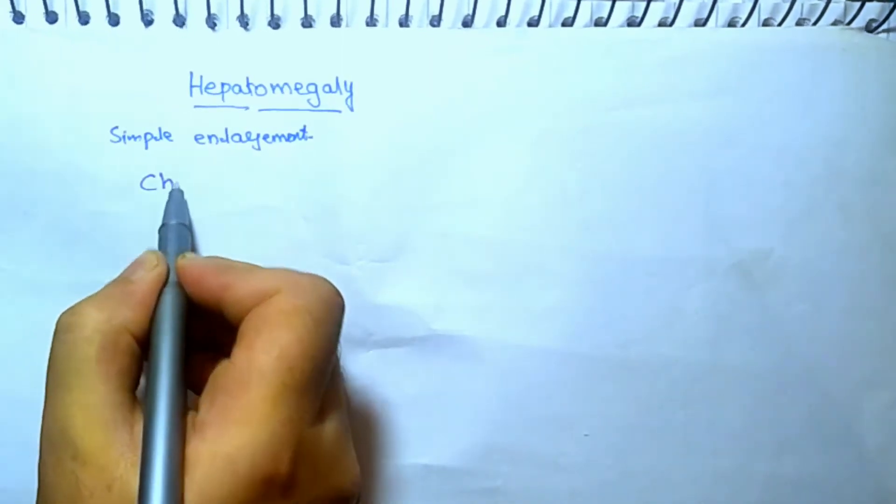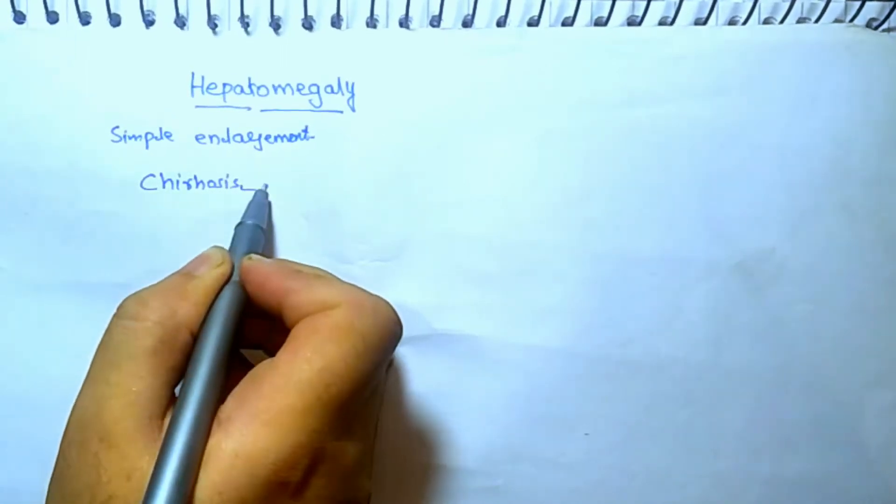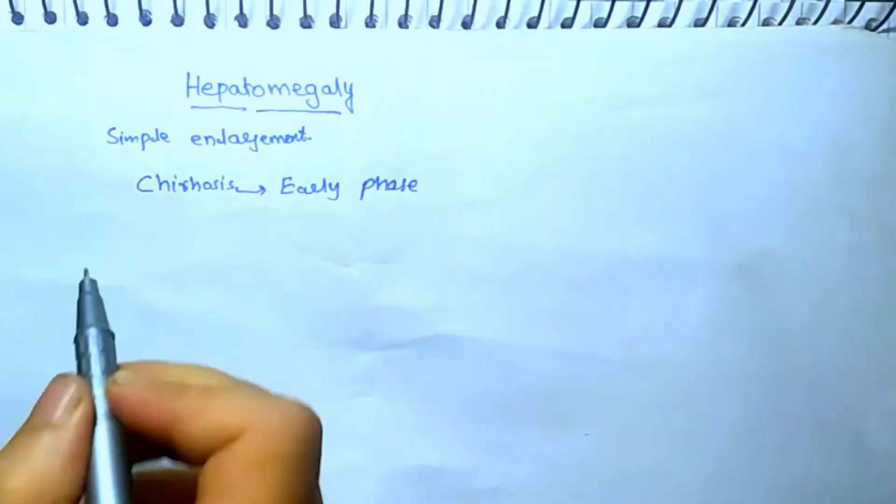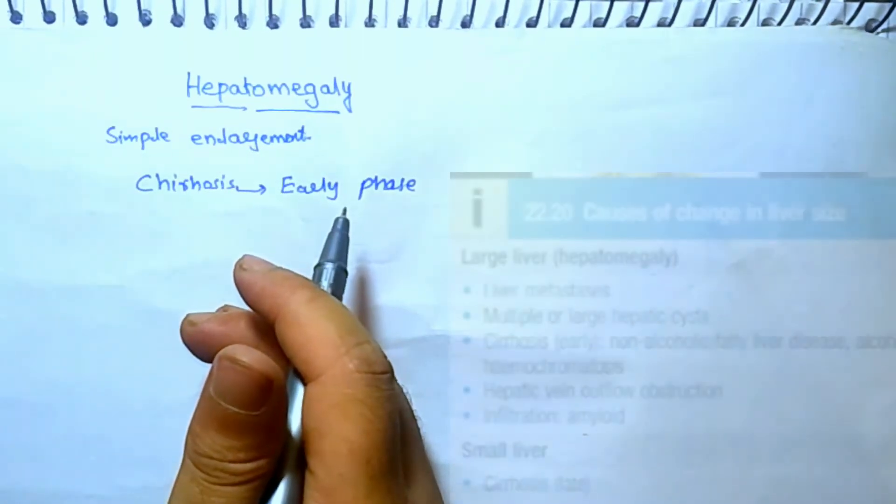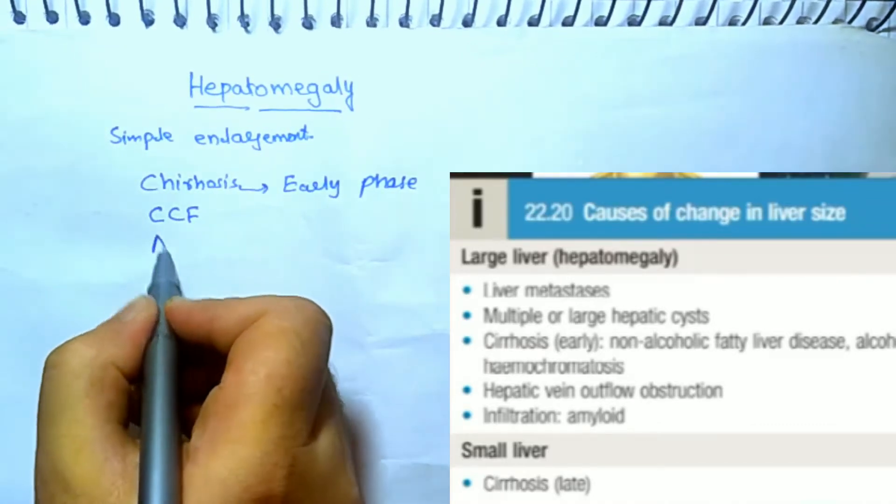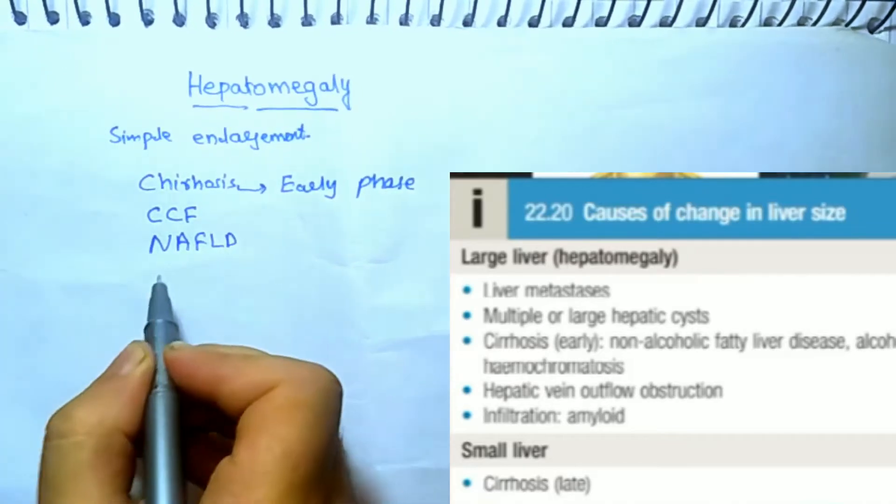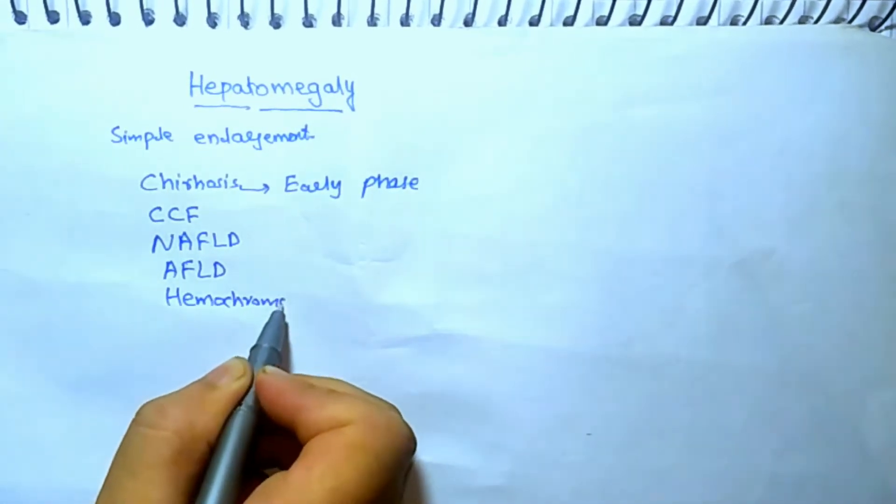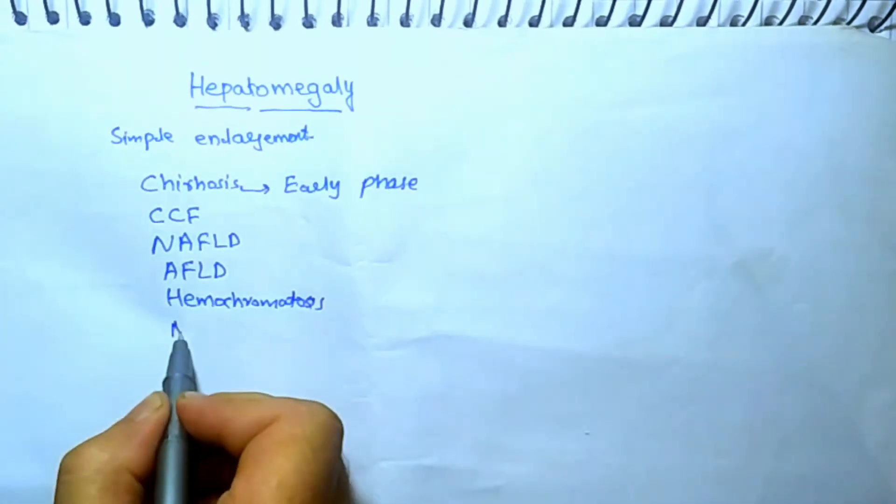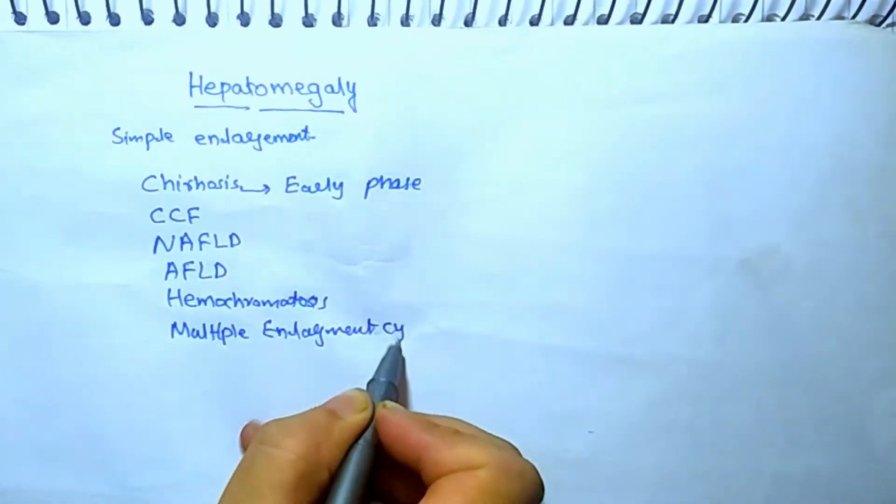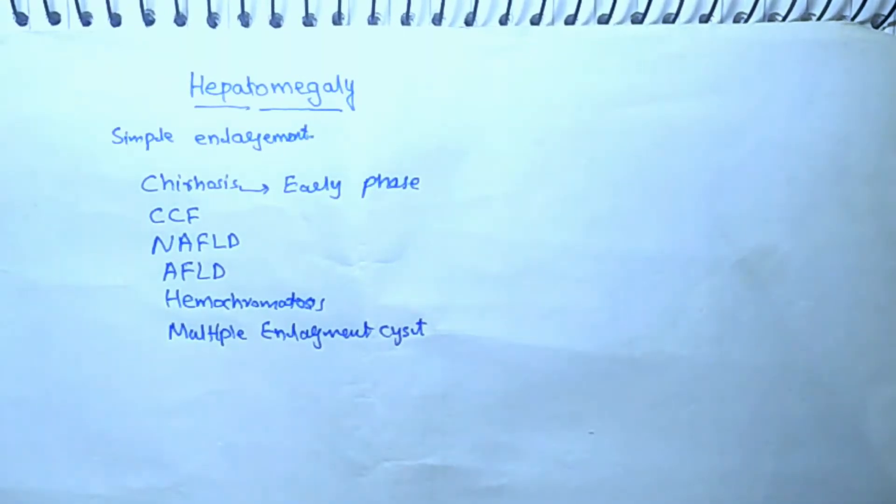The main causes are cirrhosis. In the early phase of cirrhosis there is hepatomegaly. In late cirrhosis, the size of liver decreases. Another cause is congestive cardiac failure. Similarly, non-alcoholic fatty liver disease, alcoholic fatty liver disease, hemochromatosis, and multiple enlargement cysts.